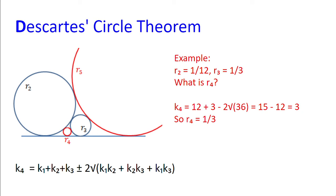So K1 equals 0, K2 equals 12 and K3 equals 3. So K4 equals 12 plus 3 minus 2 multiplied by the square root of 36, which is 15 minus 12, which is equal to 3. So the radius of R4 equals a third.